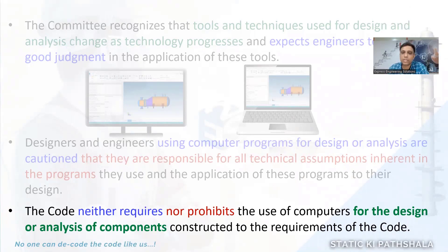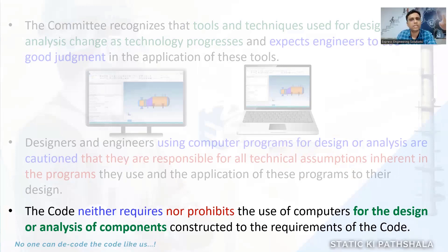Whenever a new software version is released or any changes in the software get released, the authorized inspector will always ask us about the validation of the software. If there are any changes in the software, we have to validate those with manual calculations or Excel sheets, and then prove that whatever changes have been done are in line with the code requirements. Only after that will we be in a position to trust and use that software.